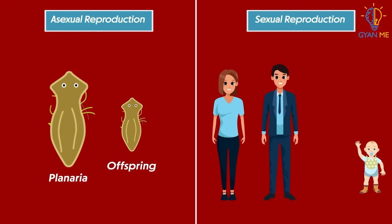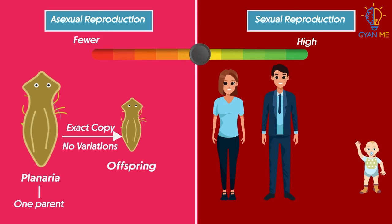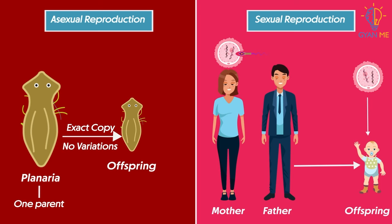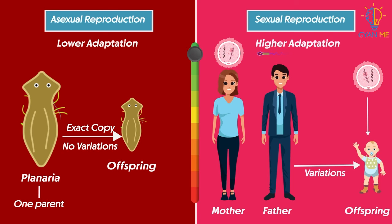So now there is a question: is asexual reproduction better than sexual reproduction, or vice versa? Sexual reproduction is considered better than asexual reproduction. In asexual reproduction, the offspring is an exact copy of the parent. Since only one parent is involved, there is no variation in the child, and they have fewer chances to adapt to different and changing environments. On the contrary, sexual reproduction involves two parents and the genetic transfer of both parents to the offspring. There are also variations in the genes, which can help to adapt to different environmental conditions. Thus, sexual reproduction allows for better survival and adaptability as compared to asexual reproduction.